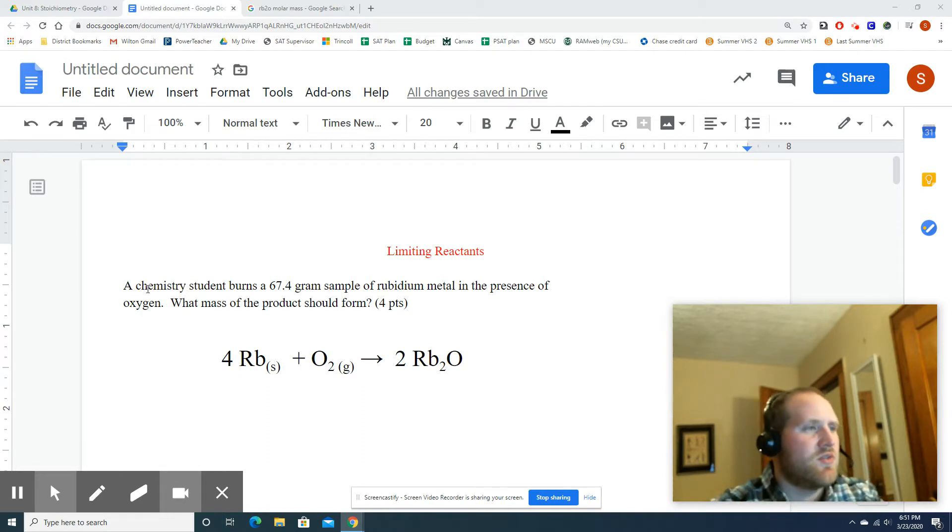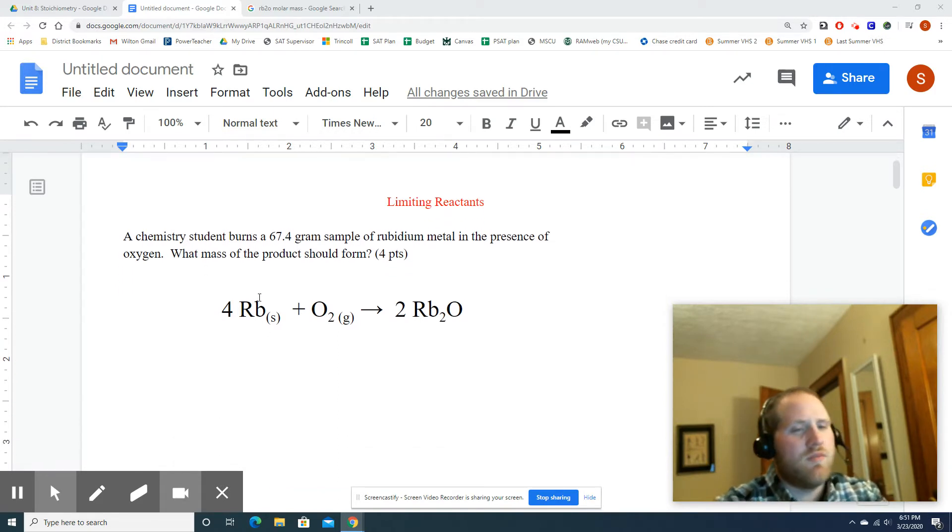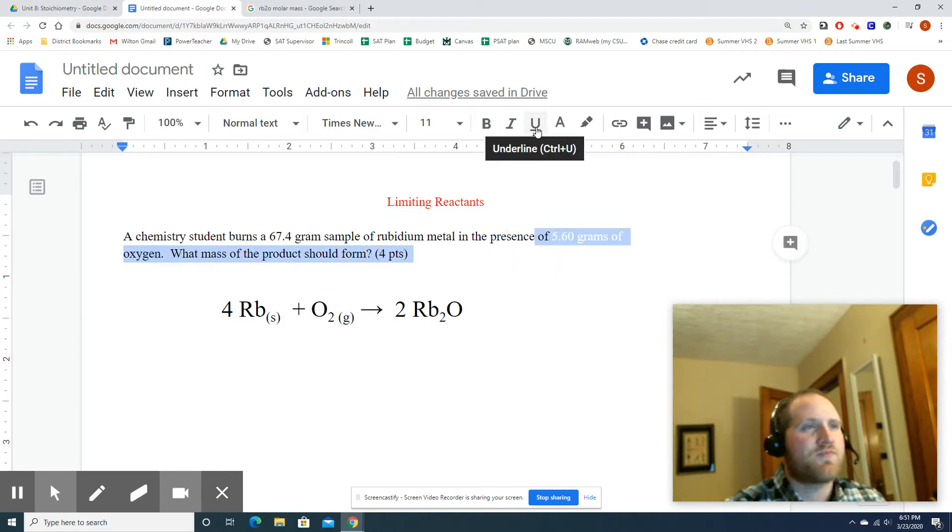All right, so in this question it says a chemistry student burns a 67.4 gram sample of rubidium metal in the presence of oxygen. What mass of the product should form? Well, this is nothing new. You've seen this type of work. This is a normal stoichiometry problem. But what assumption are we making here? Notice I told you how much rubidium metal is there, and I said in the presence of oxygen. Well, unless I say otherwise, it means that there's enough oxygen to fully react that much rubidium.